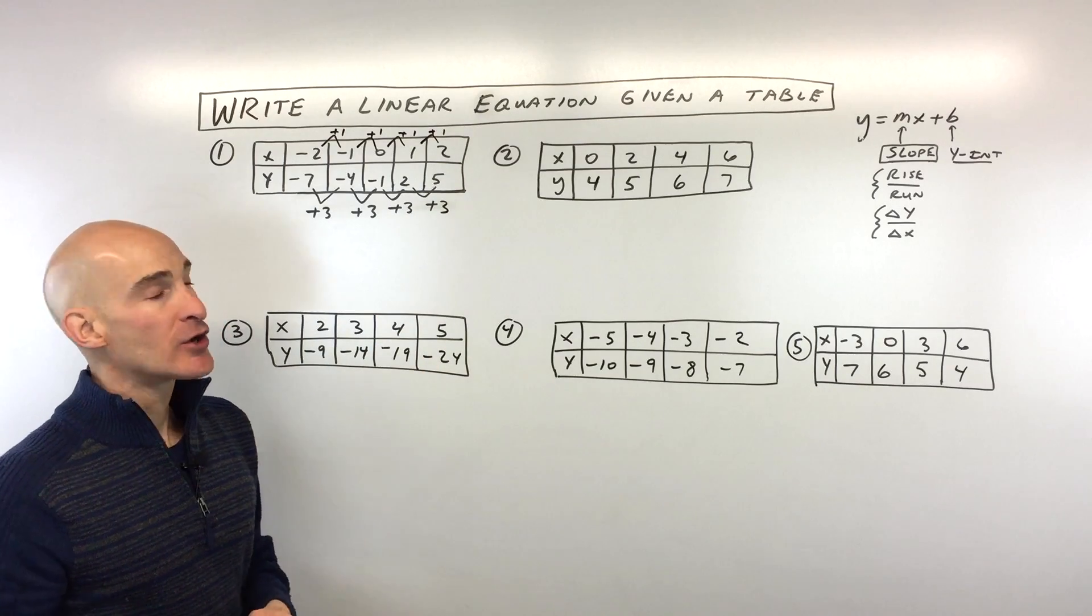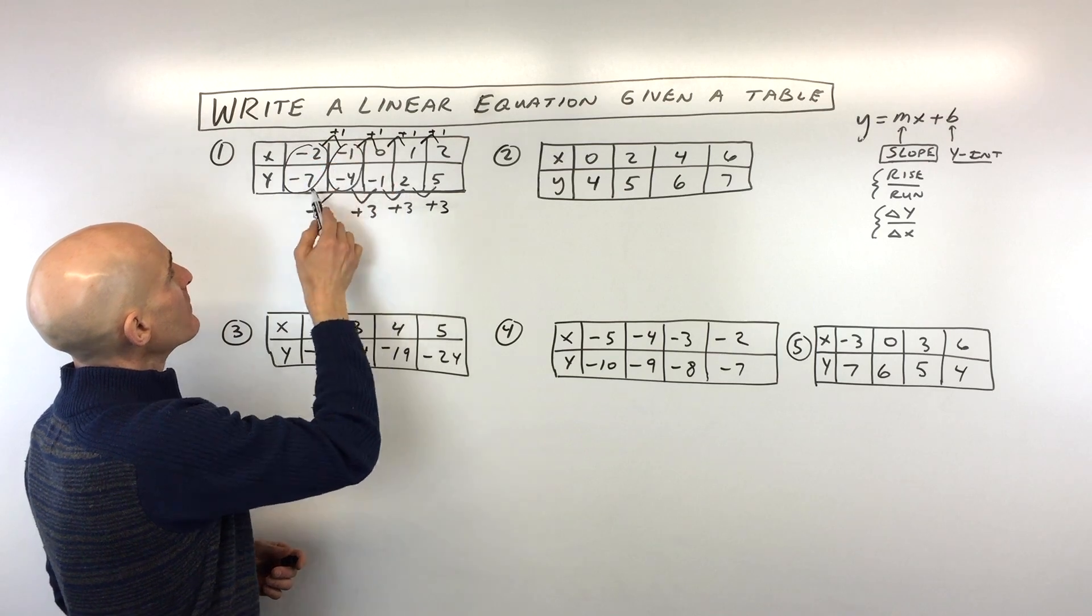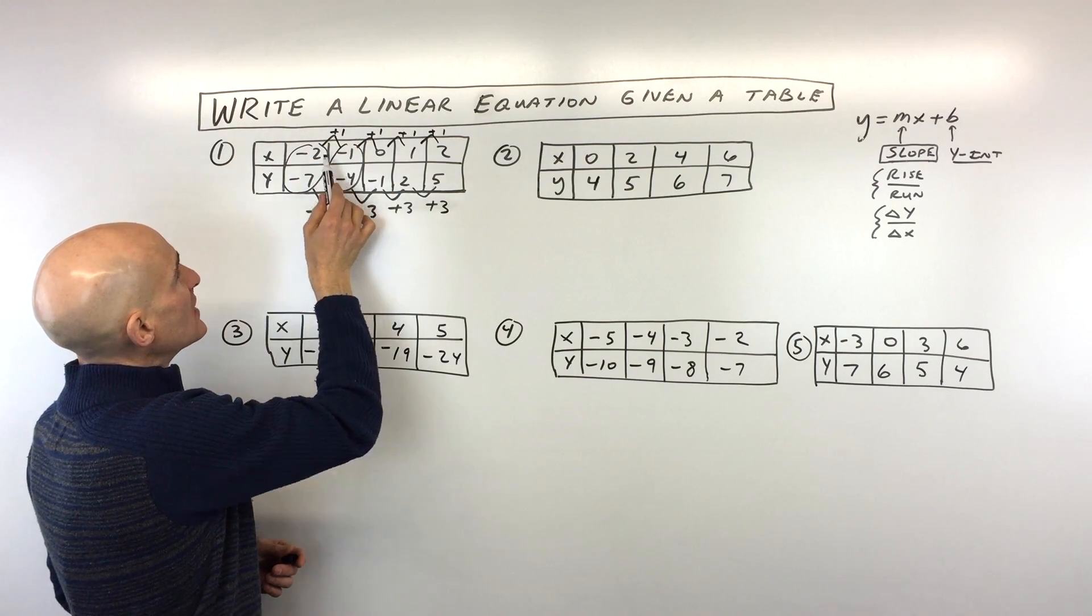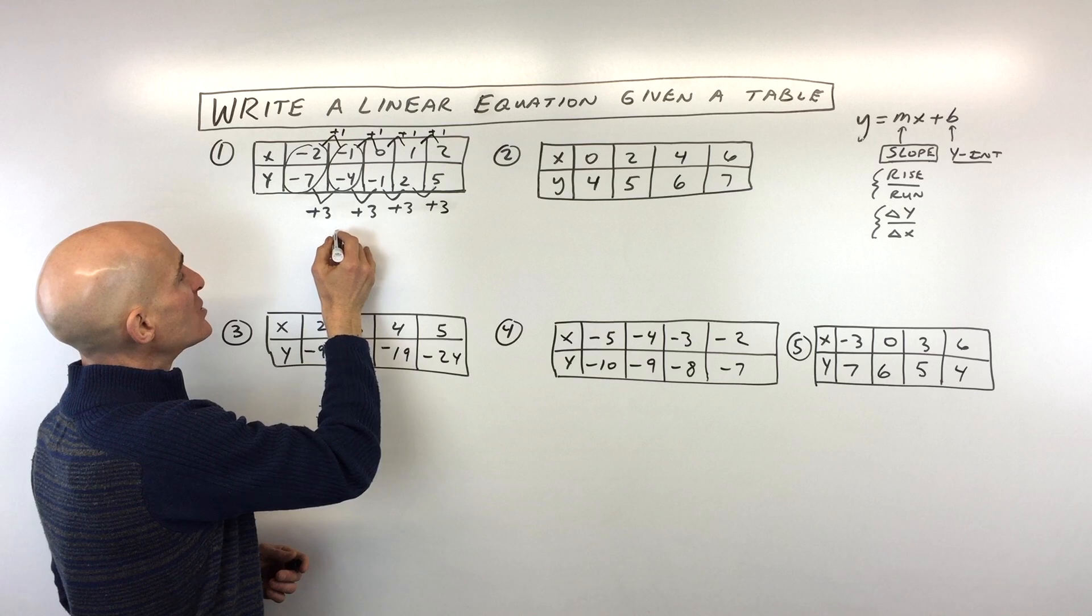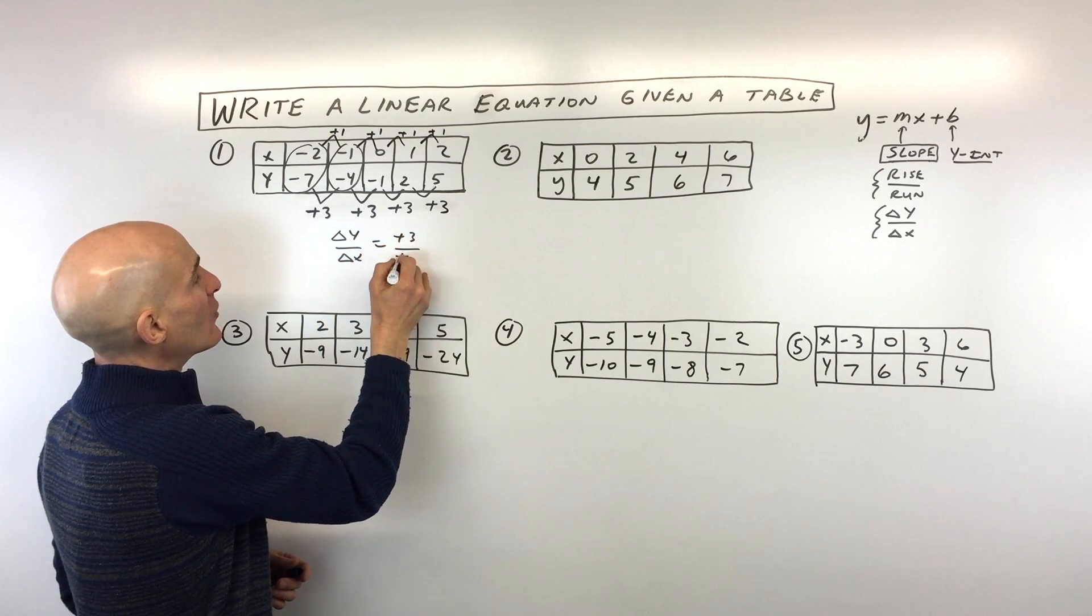Now, what you want to double check here is that when I go from this coordinate here to this coordinate here, the change in y is 3, the change in x is 1. That ratio, that change in y over change in x, is positive 3 over positive 1.